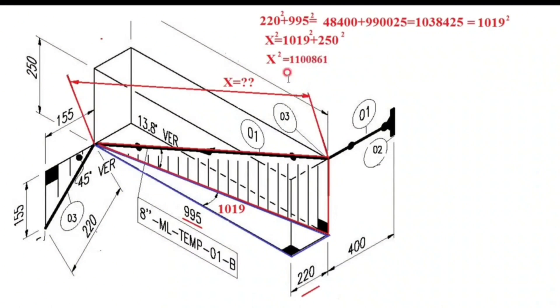We calculate and find that the length of the hypotenuse of the red triangle will be 1049 and at the same time this measurement is the distance from the center of the elbow to the center of the elbow that we were required to find.